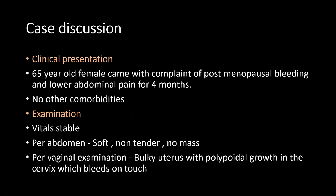Starting with the case discussion. This was a 65-year-old female who came with complaint of postmenopausal bleeding and lower abdominal pain for the past 4 months. She had no other comorbidities. On examination, her vitals were stable. Her abdomen was soft, tender, and no mass was palpable. Per vaginal examination showed bulky uterus with polypoidal growth in the cervix which bled on touch.